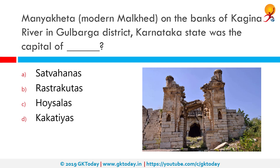Manyakhetha, or modern Malkhed on the banks of the Kagina river in Gulbarga district, Karnataka state, was the capital of the Rashtrakutas. Rashtrakuta was a royal dynasty ruling large parts of the Indian subcontinent between the 6th and 10th centuries. The earliest known Rashtrakuta inscription is a 7th century copper plate from Karnataka, detailing their rule from Manapura, a city in central or west India.